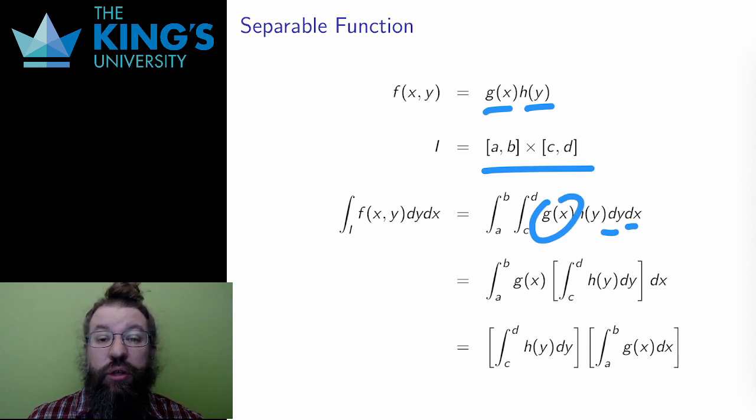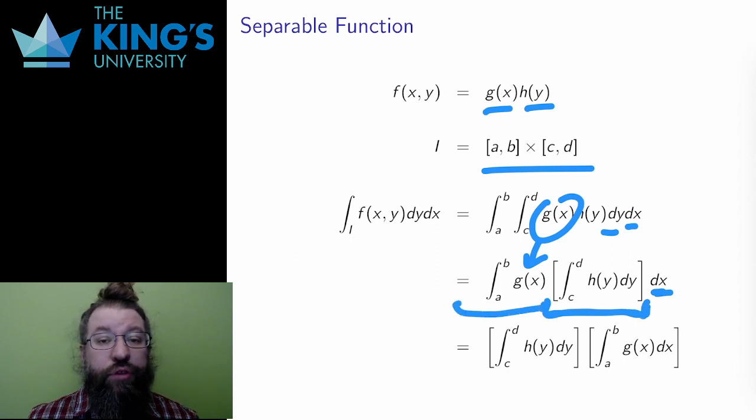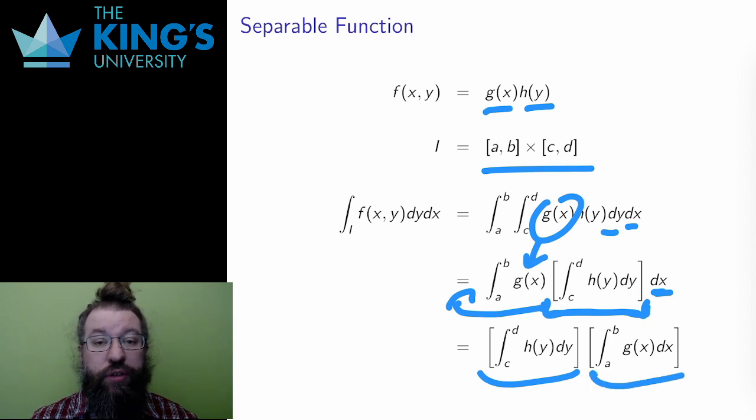Then I have an integral of h of y in the variable y with no x's involved at all. But as far as x is concerned, this whole thing is also a constant. So I can pull that whole thing out of the x integral. The result is a product of two single variable integrals.